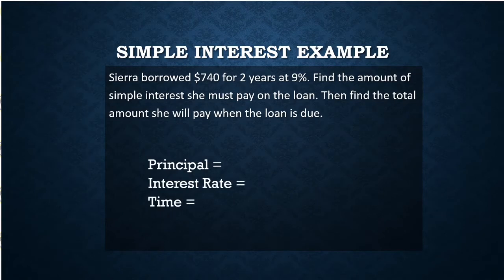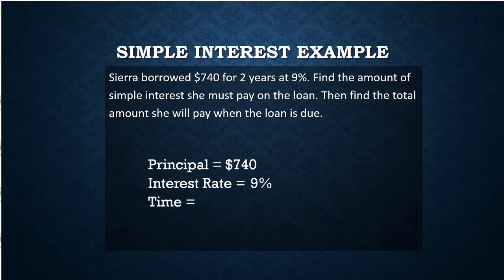According to the simple interest formula, we have to find three things: the principal, the rate, and the time. Principal is always measured in dollars, so we look in the problem and find the number that has a dollar sign next to it — and that's the $740. Rate is always measured as a percent, so we find the only number with a percent sign, and that's nine percent. And finally, there's only one number measured in a period of time, and that's two — two years.